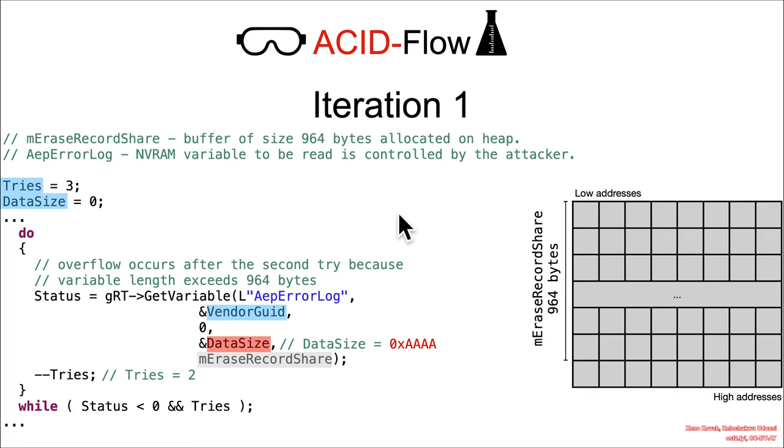On this iteration, we're calling the exact same function, but whereas on the first iteration it was a clean zero value, it is now an attacker-controlled size, asking the code to copy 0xAAAA bytes into this only 964 byte buffer.